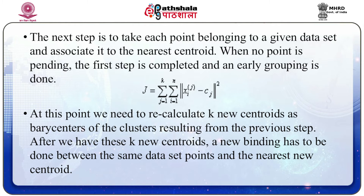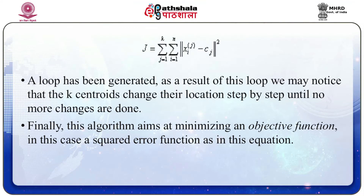At this point, we need to recalculate k new centroids as the barycenters of the clusters resulting from the previous step. After we have these k new centroids, a new binding is done between the same data set points and the nearest new centroid — a loop is generated. As a result of this loop, the k centroids change their location step by step until no more changes are done; in other words, the centroids do not move any more. Finally, this algorithm aims at minimizing an objective function — in this case, a squared error function as given in the equation below.